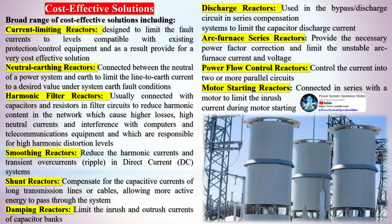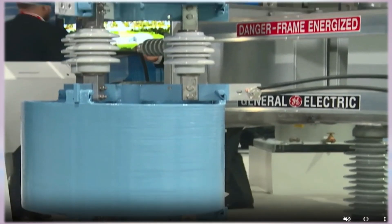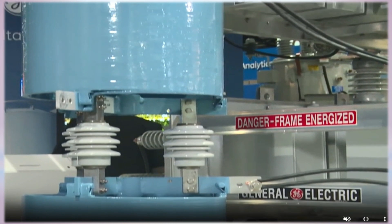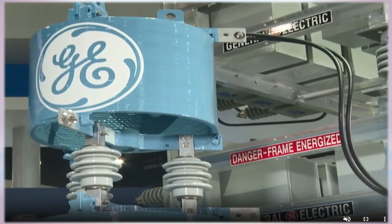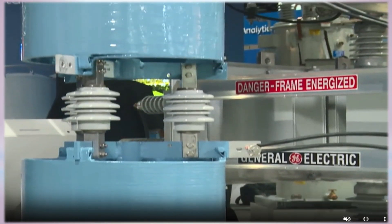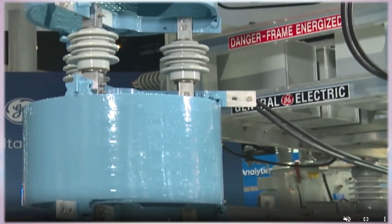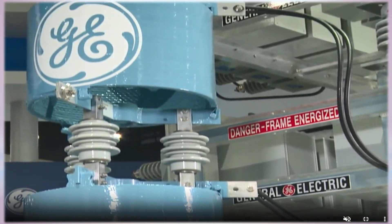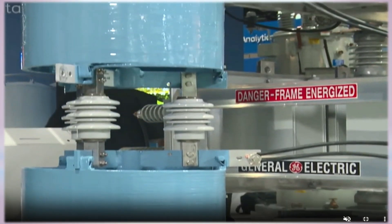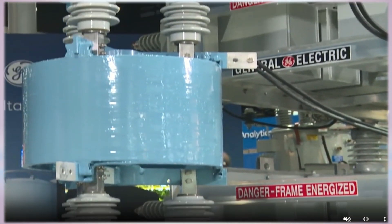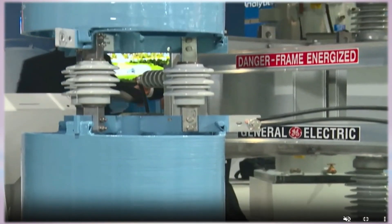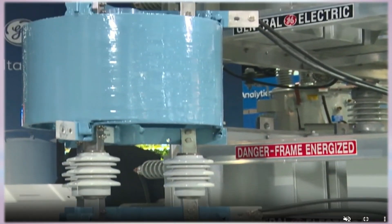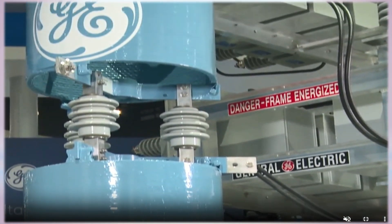Harmonic filter reactors are usually connected with capacitors and resistors in filter circuits to reduce harmonic content in the network, which causes higher losses, high neutral currents, and interference with computers and telecommunications equipment responsible for high harmonic distortion levels. Smoothing reactors reduce harmonic currents and transient over-currents ripple in DC systems. Shunt reactors compensate for the capacitive currents of long transmission lines or cables, allowing more active energy to pass. Damping reactors limit the in-rush and out-rush currents of capacitor banks.